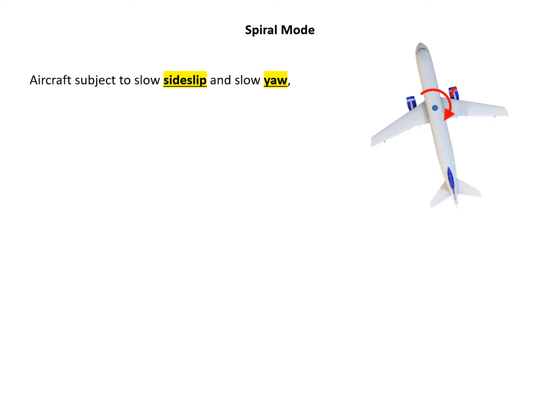The next mode, we finished the roll damping. Let's look at the spiral mode. Now we have a top view of the aircraft. Assume the aircraft is subject to slow sideslip and slow yaw. For example, now the aircraft is yawing at a rate of r.